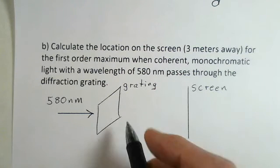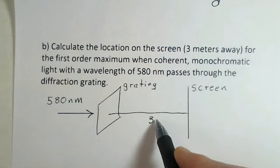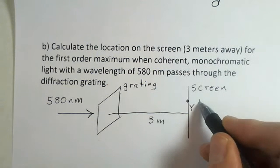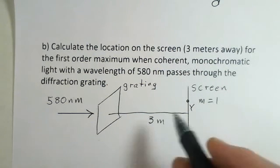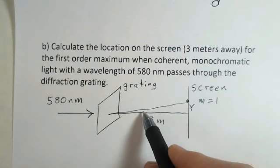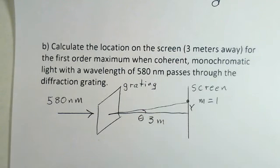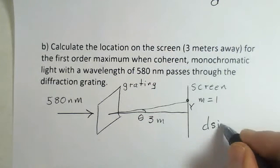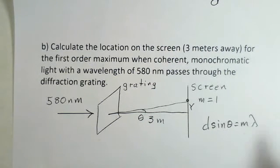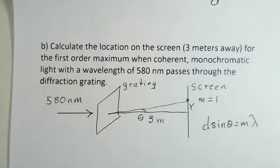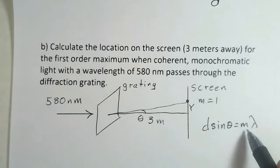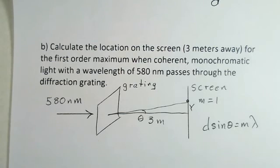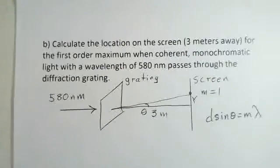So our screen is three meters away. We're interested in this Y position for M equals 1, the first order maximum. There's some angle theta that comes out here. And that angle theta is the angle that's calculated using D sine theta equals M lambda. In part A we found the value for D. We are given the wavelength 580 nanometers. So we're ready to go ahead and proceed with the calculation.